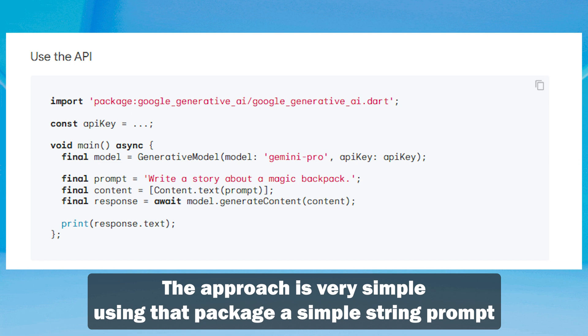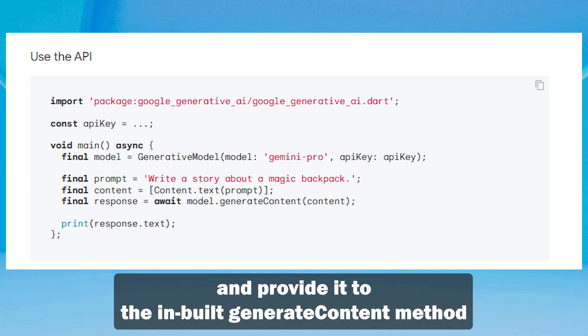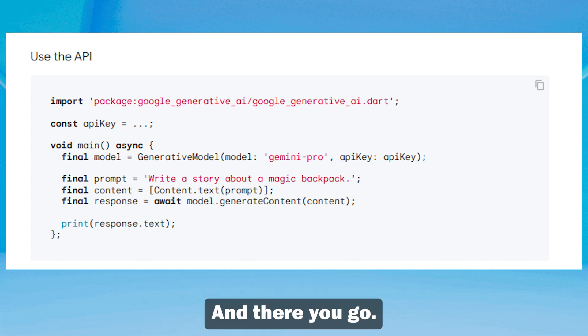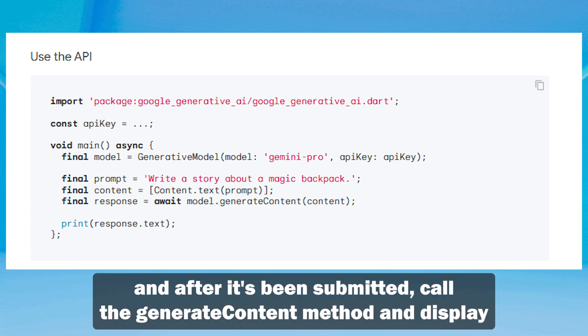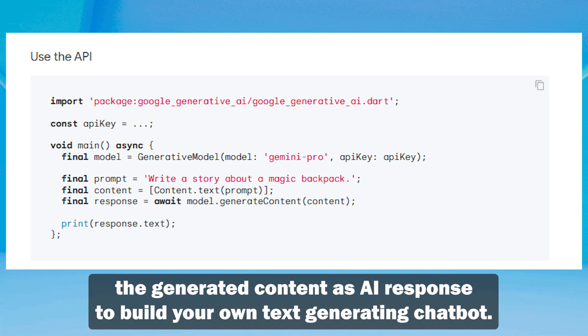The approach is very simple. Using that package, pass a simple string prompt and provide it to the built-in generate content method. In your Flutter app, you can take this prompt from a text field, and after it's been submitted, call the generate content method and display the generated content as an AI response to build your own text-generating chatbot.